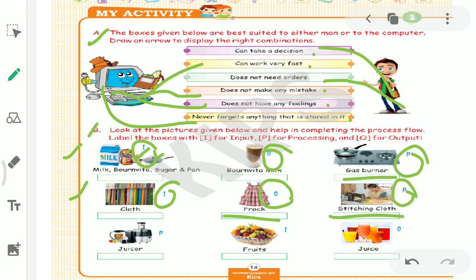Now move to last example. Juicer - what is the juicer? It is our processing unit. In it we do processing. Fruits - what are they? Input unit. We will give fruits, put them in the juicer. Juicer will process. In the end, what will we get? Juice. So our result will be juice. This will be our output.